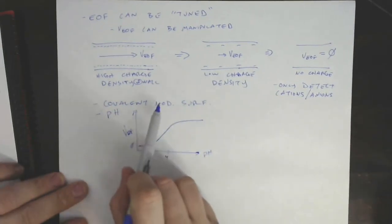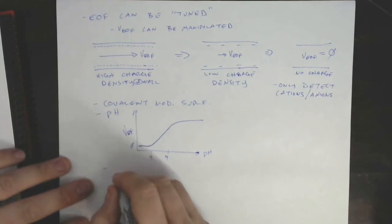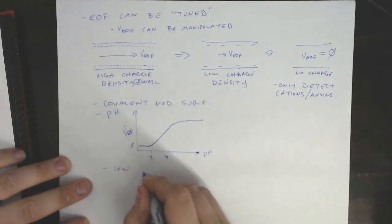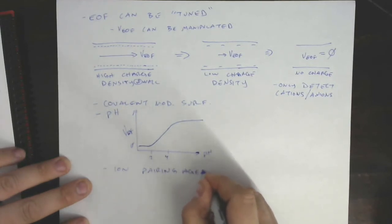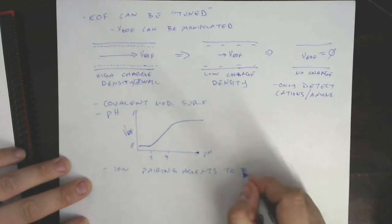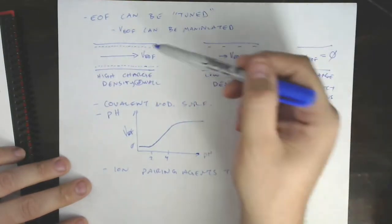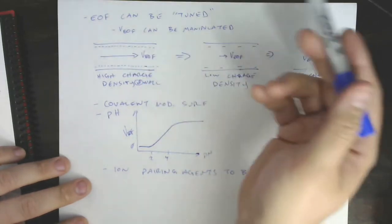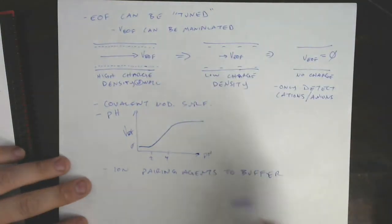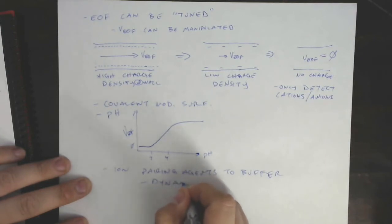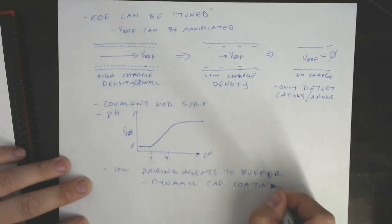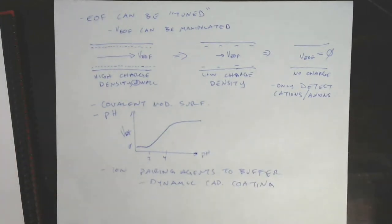And then there are non-covalent modifications to the surface. That is, we can add ion pairing agents to the buffer that's flowing through this thing. And if we have a high enough concentration of those, they'll basically directly interact, although non-covalently, with the surface here, shield some of that charge, we'll see the EOF drop off. This is sometimes called a dynamic capillary coating. Okay, so we can do that.